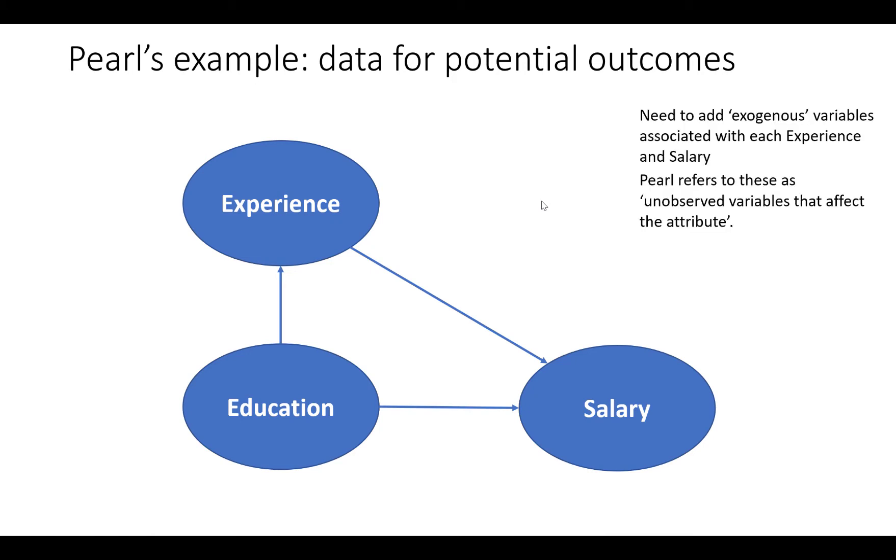We also need to add so-called exogenous variables associated with both experience and salary. Pearl refers to these as unobserved variables that affect the attribute. So we've got the exogenous variable for experience and the exogenous variable for salary.